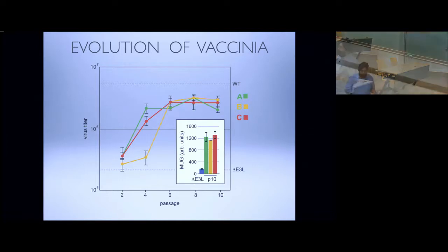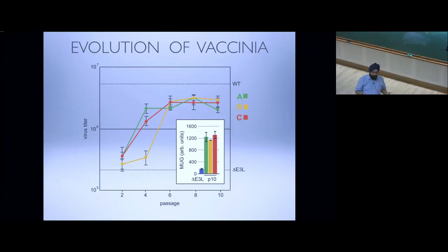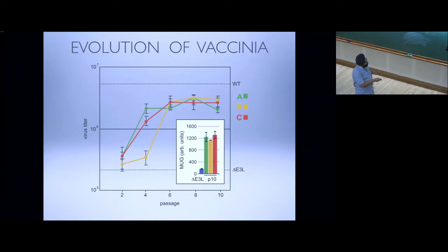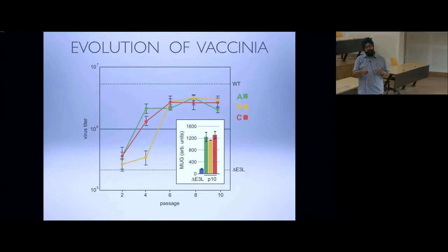In a joke slide, you could say: if you're an evolutionary biologist, this is awesome news because adaptation has occurred. If you're interested in epidemiology, this is very bad news — it took less than six passages for the virus to evolve a workable solution to defeat PKR. All three replicates actually achieved very high fitness from a very low starting point.